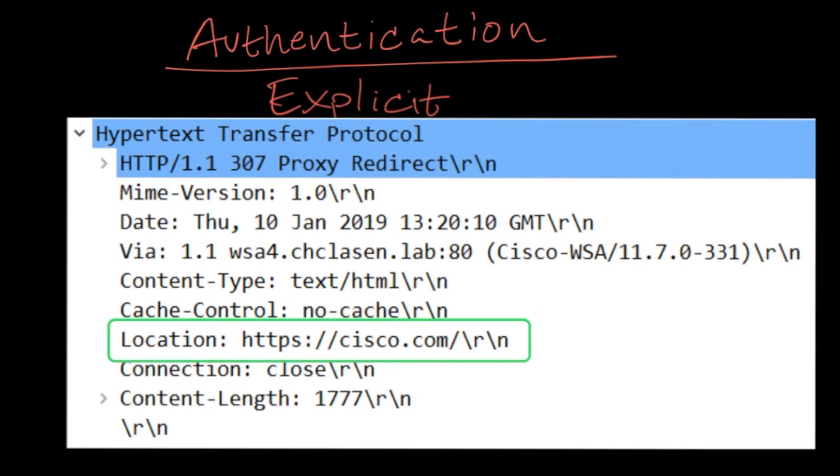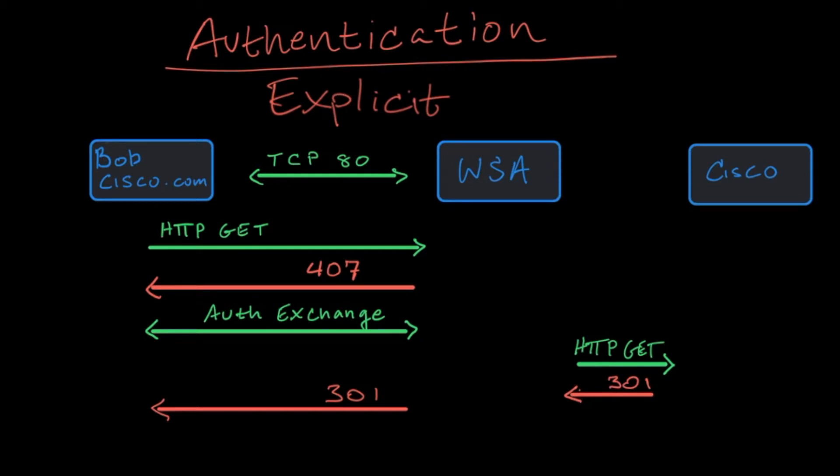The WSA access logs will show each of these transactions. The %m custom field will show the authentication mechanism that was used to authenticate Bob.